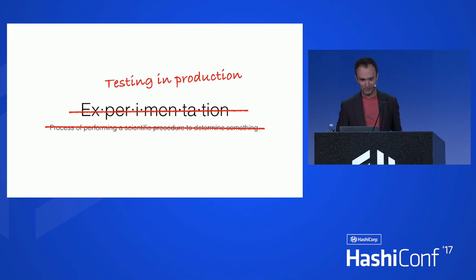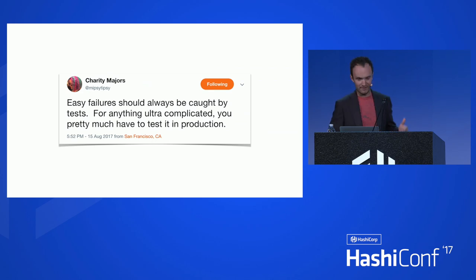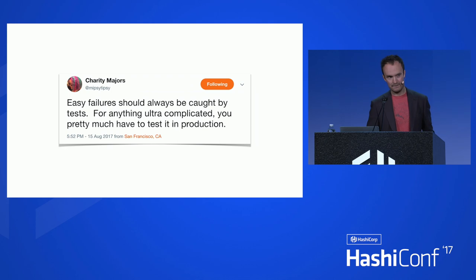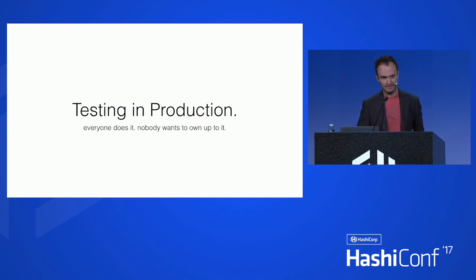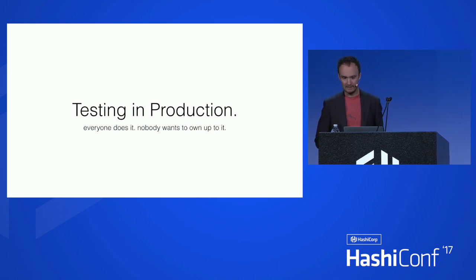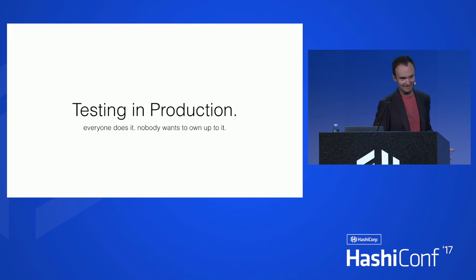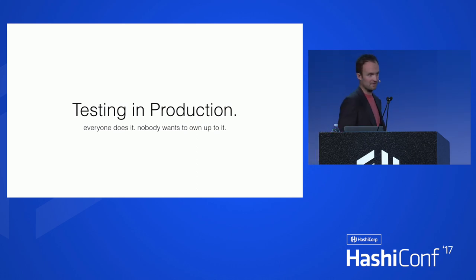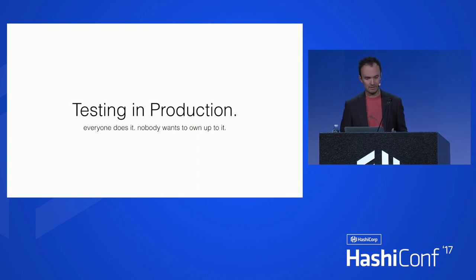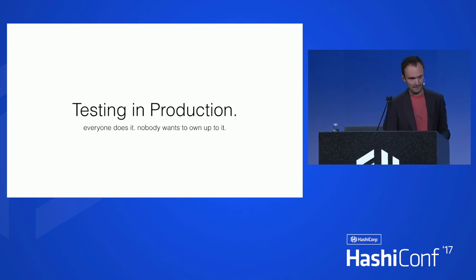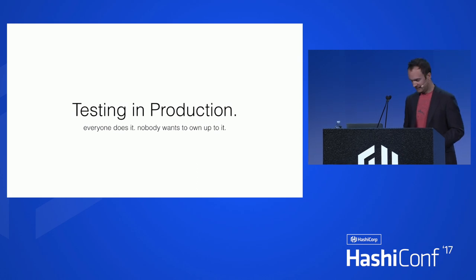I found a really great tweet from Jerry Majors: 'Easy failures should always be caught by tests. For anything ultra-complicated, you pretty much have to test it in production.' And she is 100% right. Testing in production — everybody has done it, nobody wants to own up to it. If you've ever done a rollback in production because something went differently to how you expected, you've tested in production. Many engineers find themselves in a false sense of security when their test suites pass, then are surprised at the interesting things that go wrong in production. Unit and functional tests are on the first layer of testing — they seldom cover the wide variety of things that can go wrong, particularly with systems at scale.